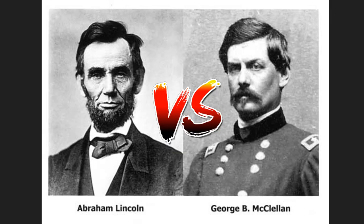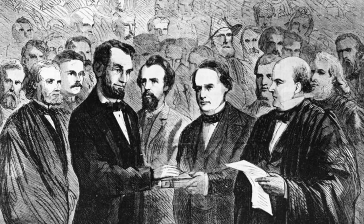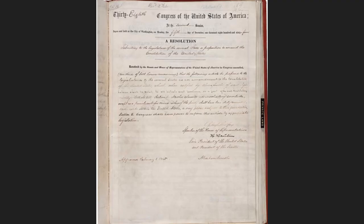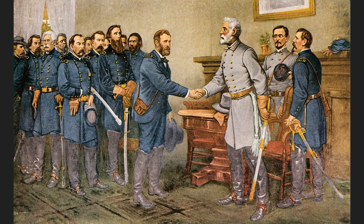Lincoln was nominated for his second term and ran against the former commander George McClellan. Lincoln won his second term of presidency with 55% of the popular vote. Lincoln influenced the House of Representatives to approve the 13th Amendment, which states that all slaves are freed and that the owner is not compensated. They eventually passed the Amendment in 1865 and slaves were now free. On April 9, 1865, Lee surrendered to Grant, marking the end of the Civil War.